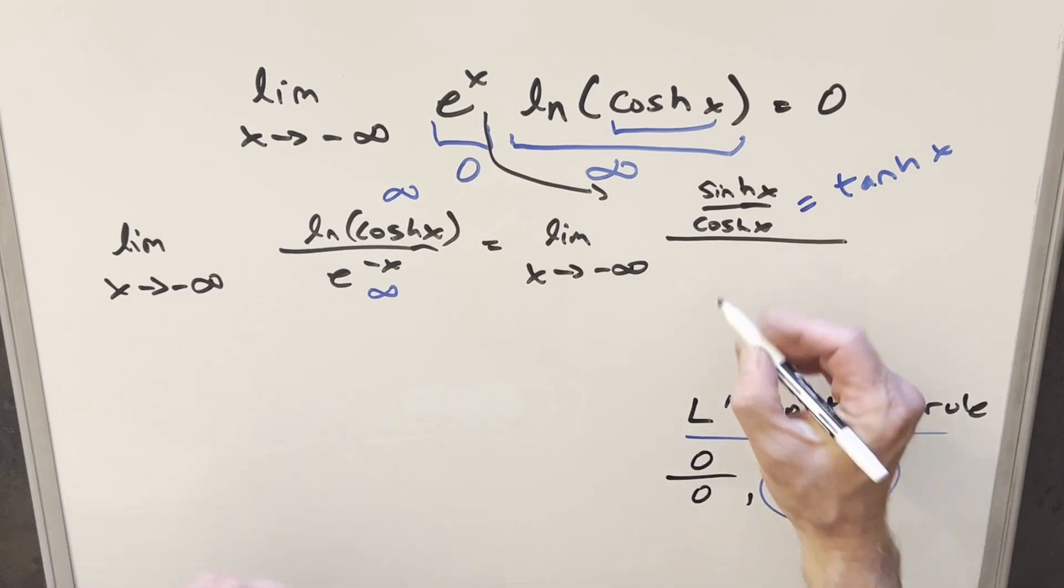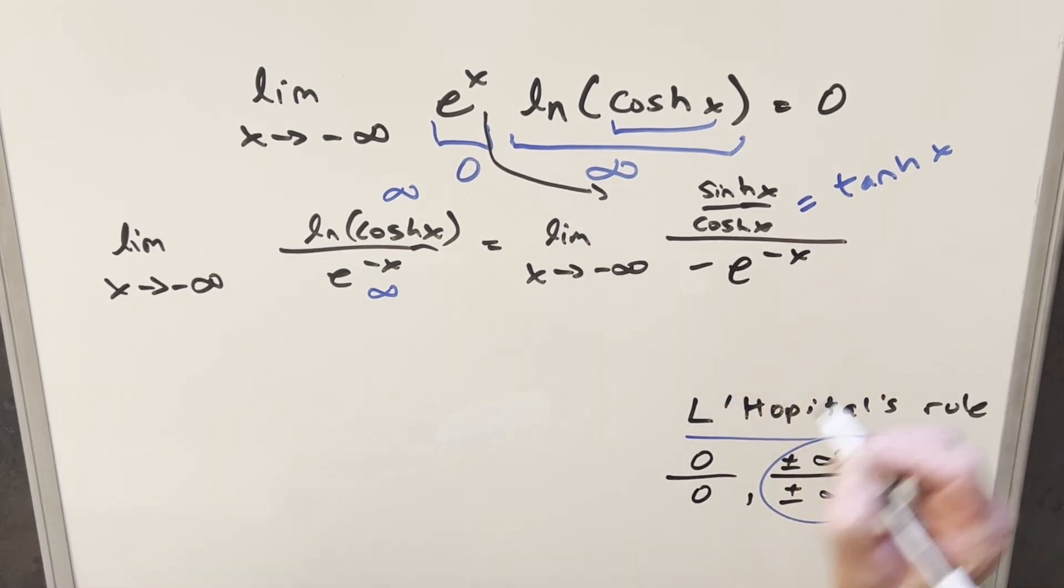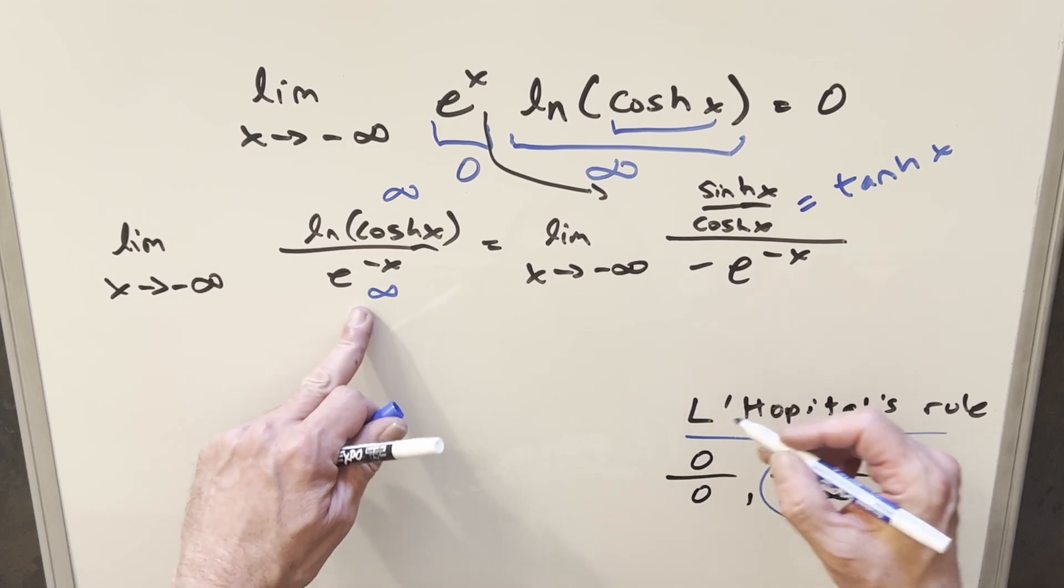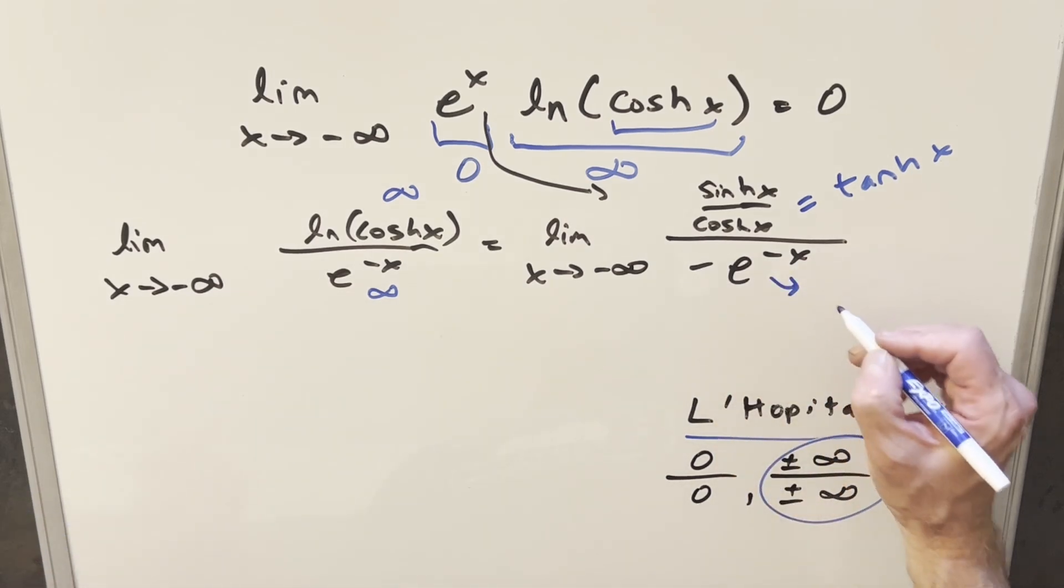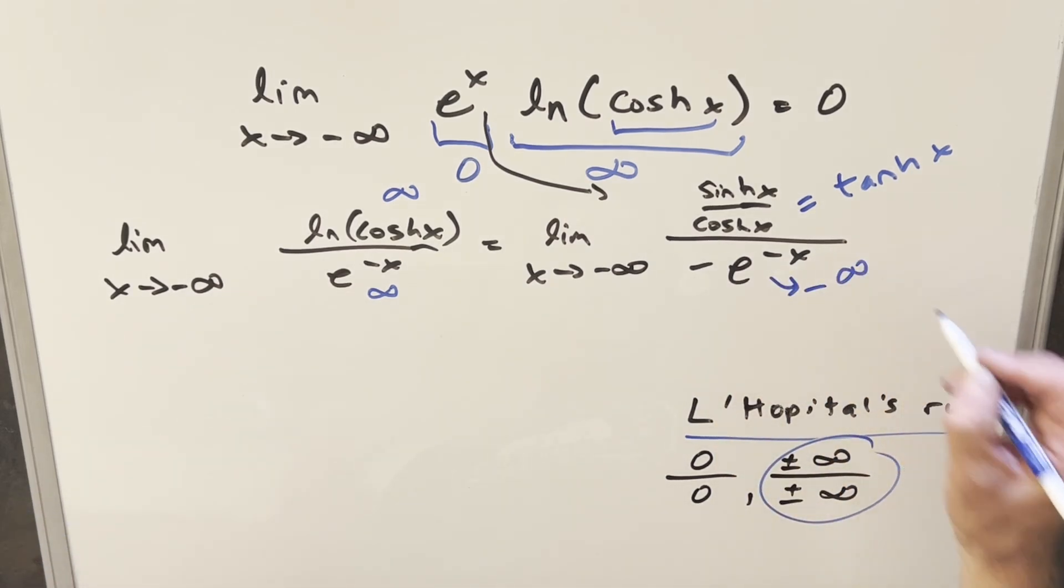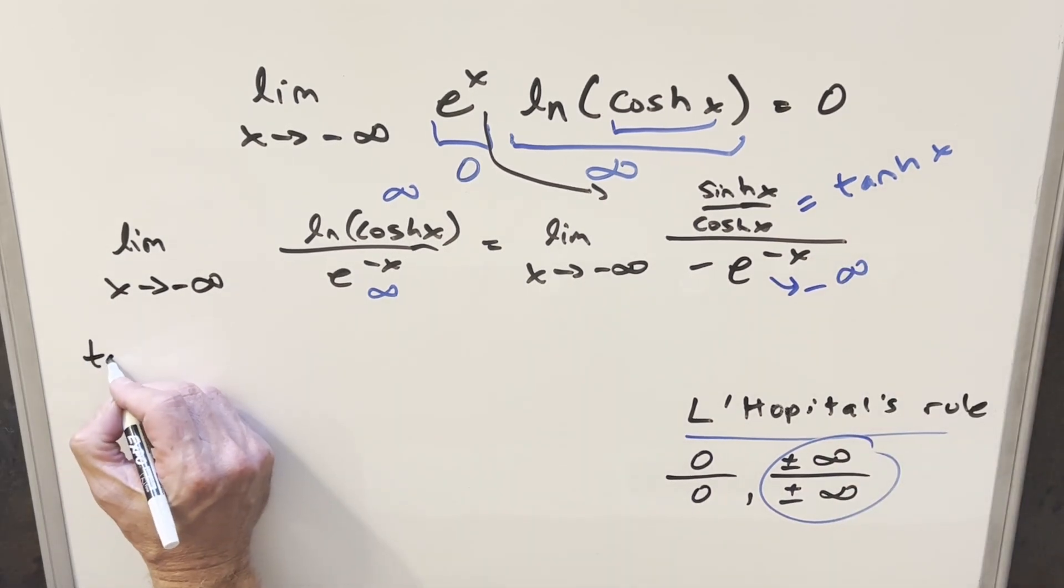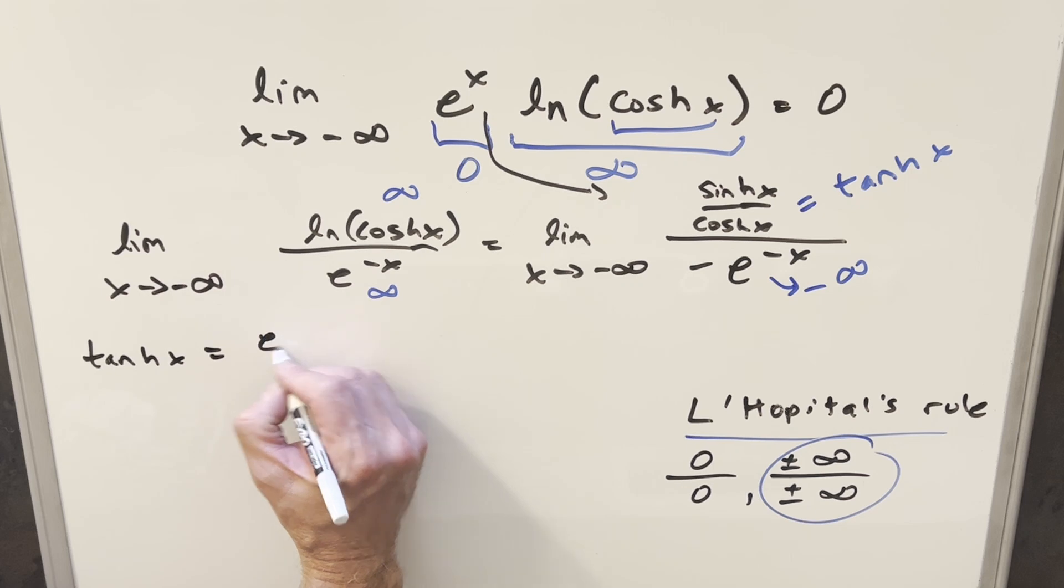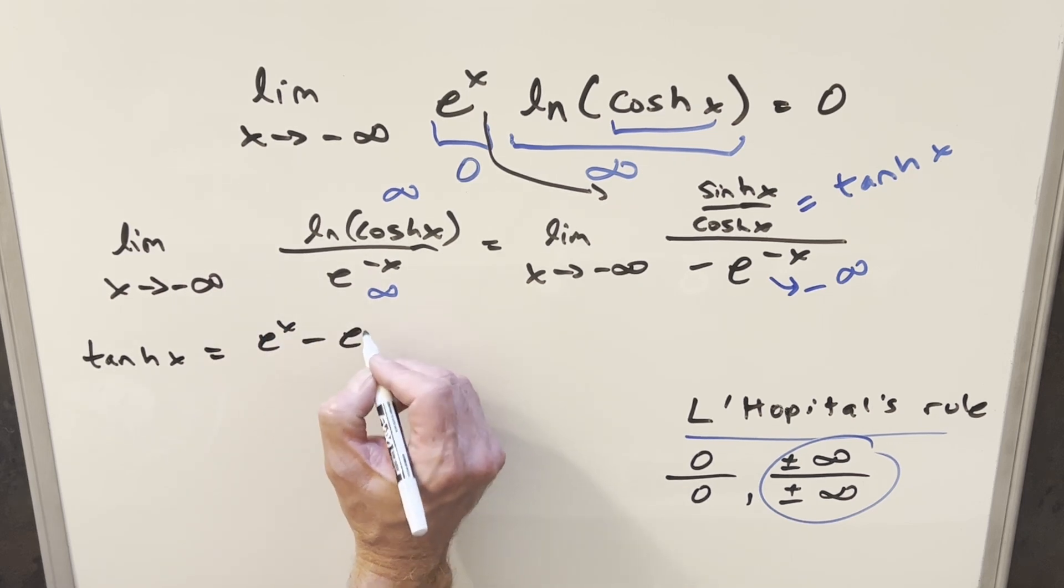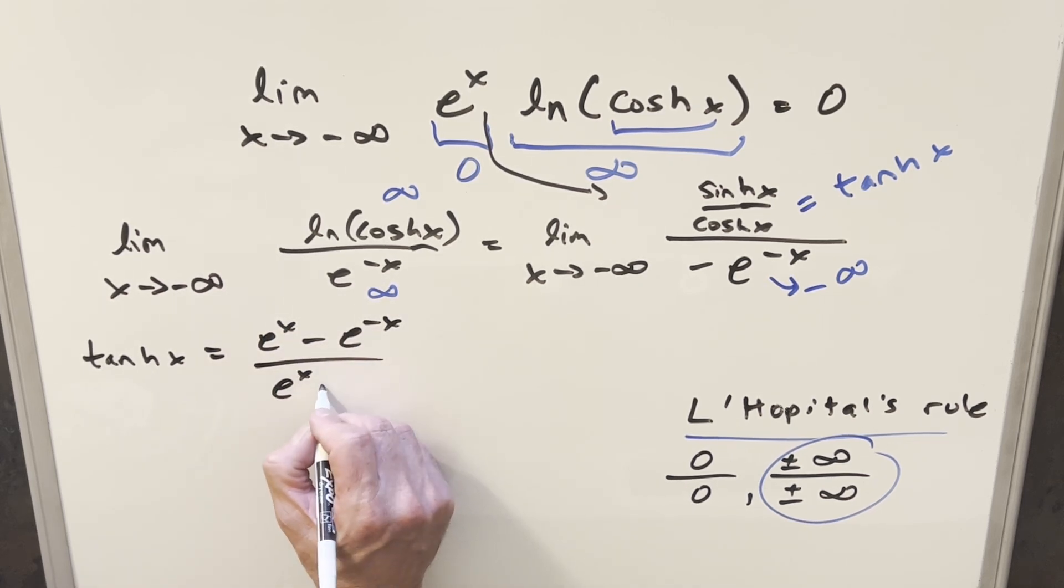Then next, taking the derivative of the denominator, this is just going to be minus e minus x. Now in the denominator, this is basically the same thing where this was infinity here. Now we have the minus sign. So our denominator is going to minus infinity. But to evaluate the numerator, I think I do want that definition. So for tanh of x, you can just remember it as sinh x over cosh x. But this is going to be e to the x minus e minus x over e to the x plus e minus x.